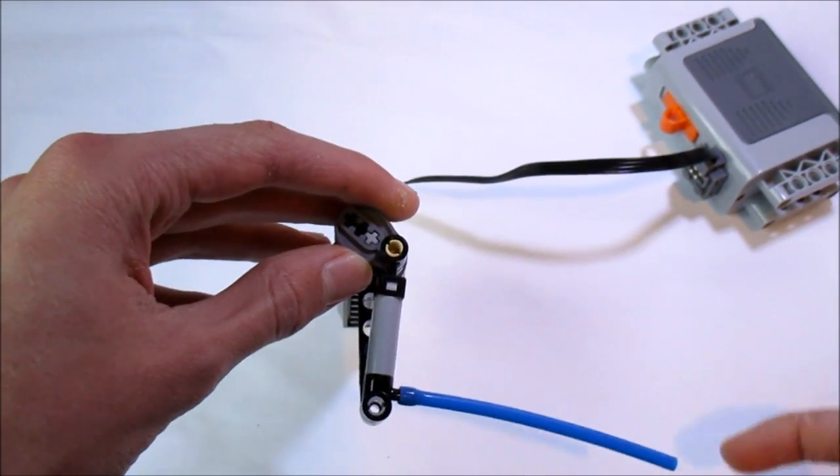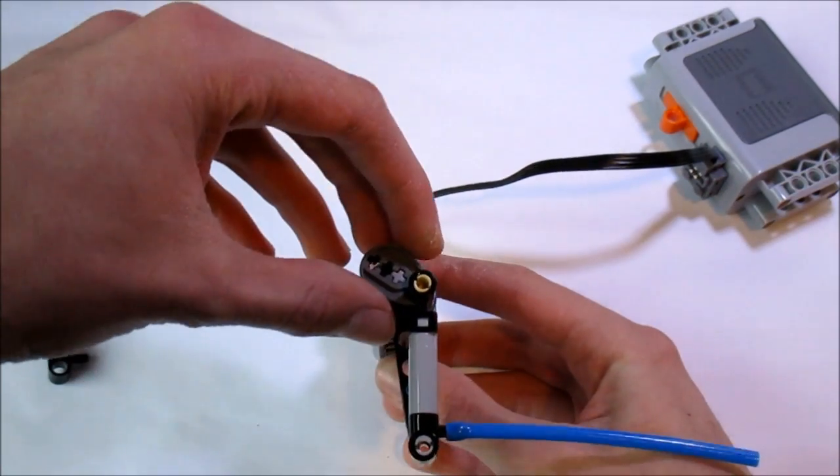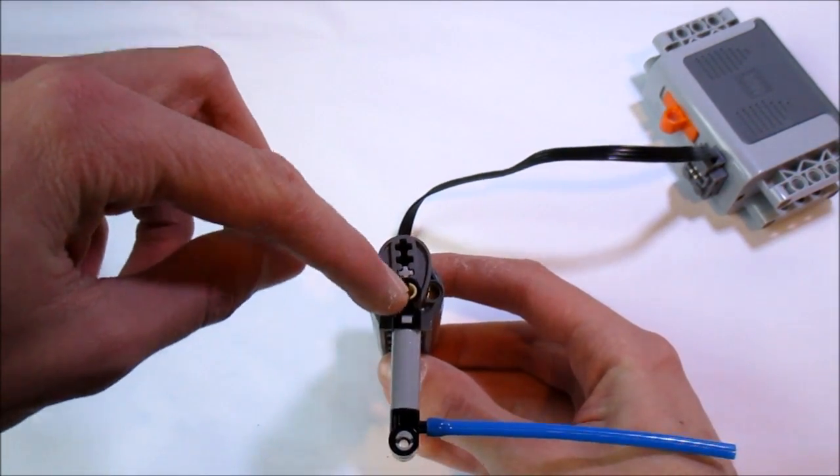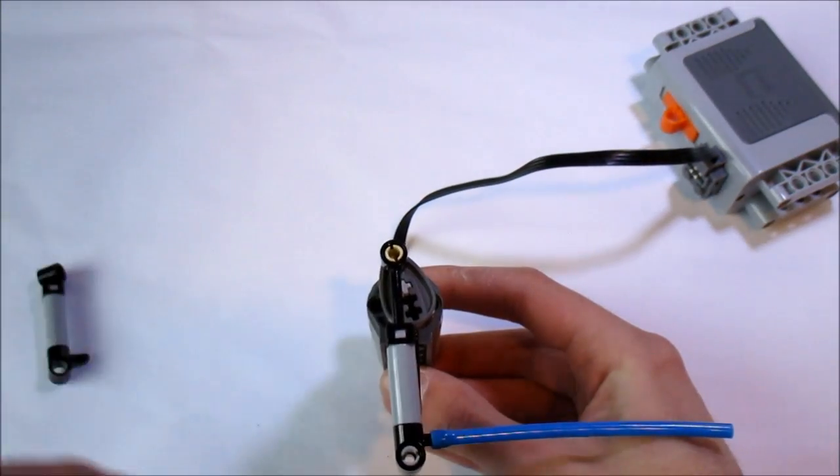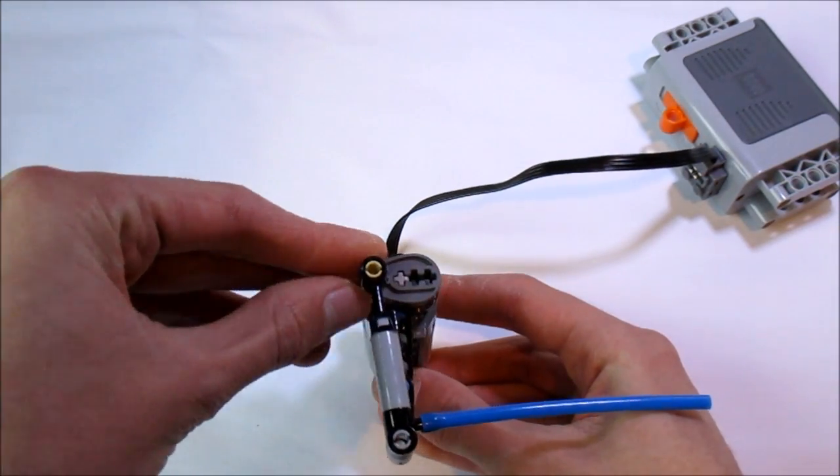Another important note when using compressors is to make sure that you're getting the full stroke. What I mean by this is, when it's attached to your motor, it should come down all the way and then come up all the way. If you don't get this full motion, this full stroke, it's not going to either suck in the air properly or pump it out properly.